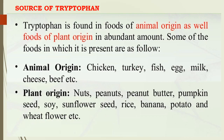The basic natural sources of tryptophan include animal-origin foods such as chicken, turkey, fish, egg, milk, cheese, and beef. Plant-origin sources include nuts, peanuts, peanut butter, pumpkin seeds, soy, sunflower seeds, rice, banana, potato, and wheat flour. These natural sources allow us to obtain tryptophan without resorting to supplements.